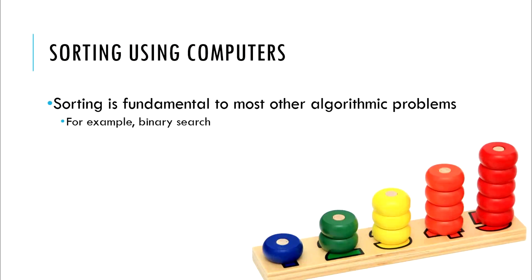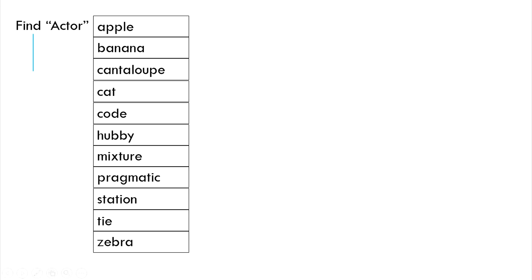In computers, sorting is fundamental to most other algorithmic problems. For example, the binary search. Binary search is essentially analogous to searching for a word in a dictionary.